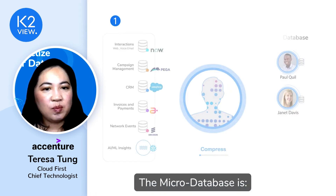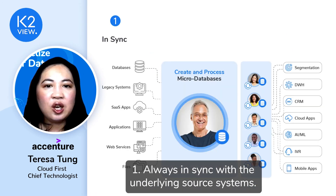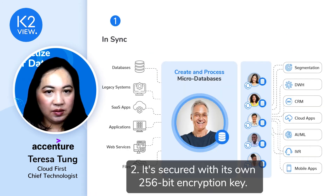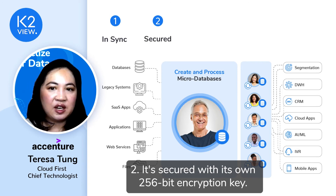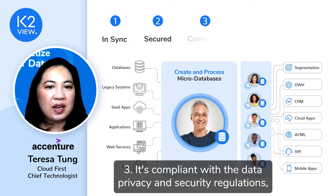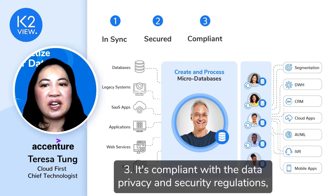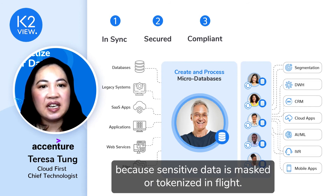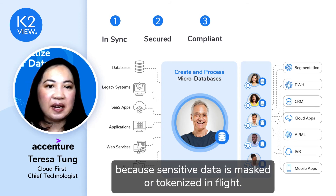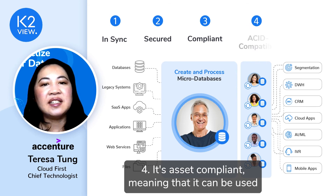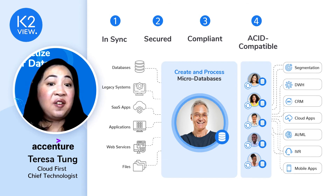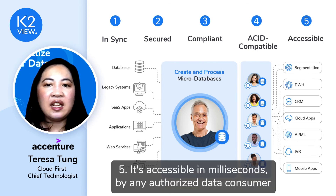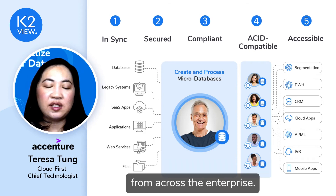The micro-database has five key properties. One, it's always in sync with the underlying source systems. Two, it's secured with its own 256-bit encryption key. Three, it's compliant with data privacy and security regulations because sensitive data is masked or tokenized in flight. Four, it's asset compliant, meaning it can be used as the database of record for new applications. And five, it's accessible in milliseconds by any authorized data consumer from across the enterprise.